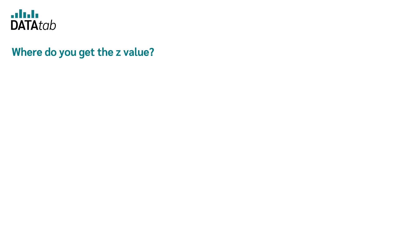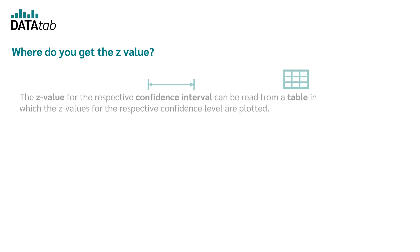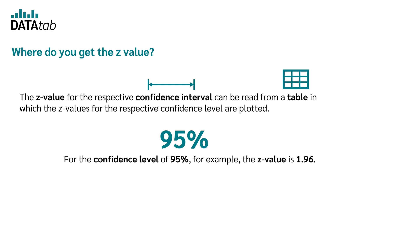So, the next question is, where do we get the z value? The z value for the respective confidence interval can be read from a table in which the z values for the respective confidence level are plotted. For the confidence level of 95%, for example, the z value is 1.96.